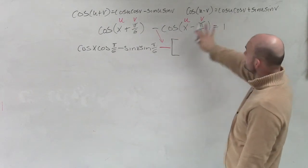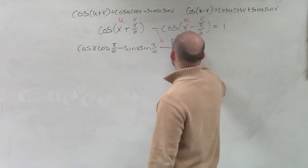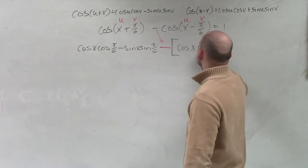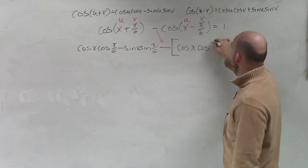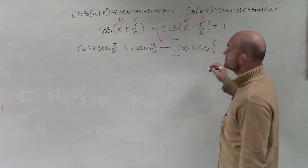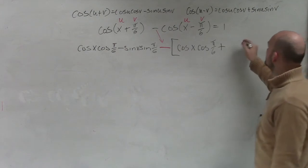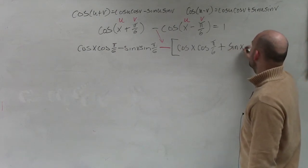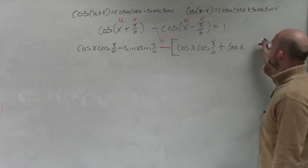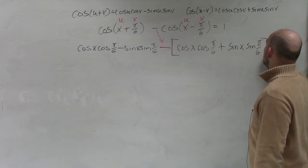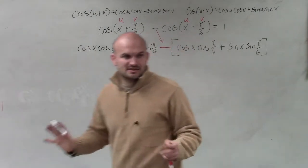So now I'm going to use this formula since it's the difference. So now it's cosine of x, or of u, well, u in this case is x, times cosine of v, which in this case is π over 6. Remember, it's the positive value, not the negative. And then add sine of u, which is x, times the sine of v, which is π over 6.